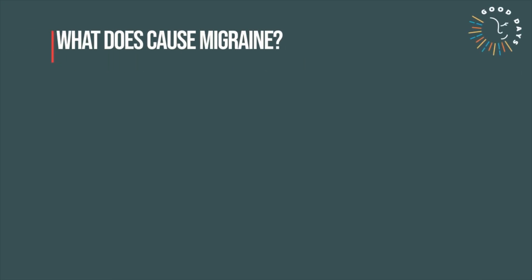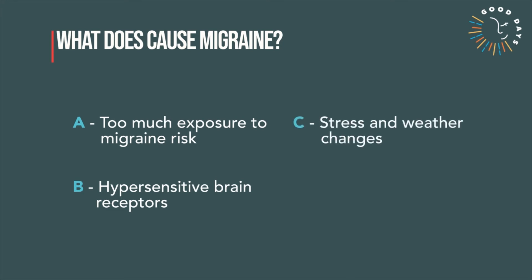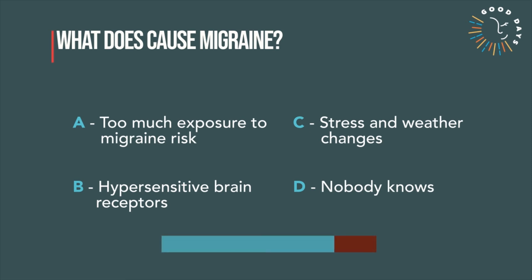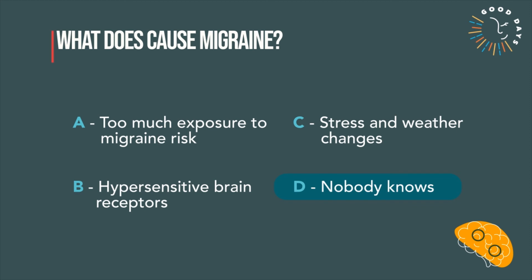Last question: what does cause migraine? Answer A: too much exposure to migraine risk. Answer B: hypersensitive brain receptors. Answer C: stress and weather changes. Answer D: nobody knows. The correct answer is D — nobody knows. As of today, researchers do not know the causes of migraine. Too much exposure to migraine risk will upset brain receptors but not cause migraine. Hypersensitive brain receptors may trigger migraine attacks but not cause migraine. Stress and weather changes are commonly reported factors of migraine risk but do not cause migraine.